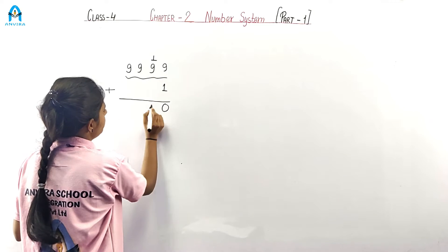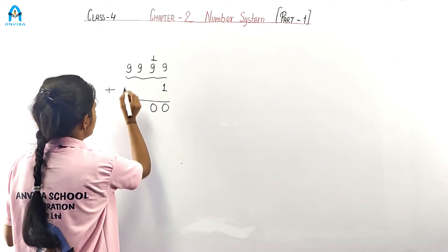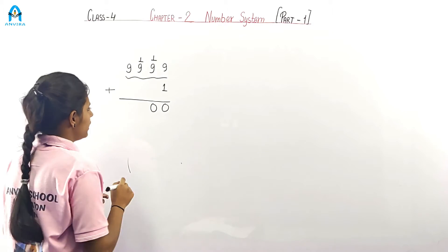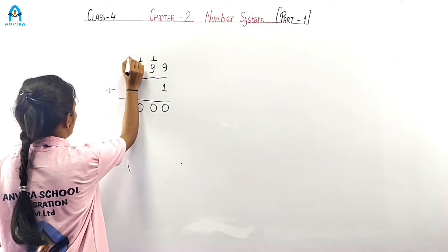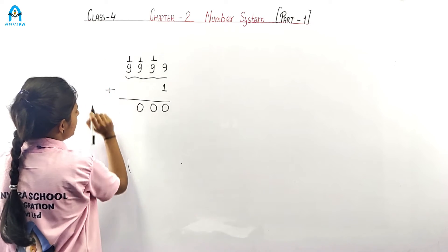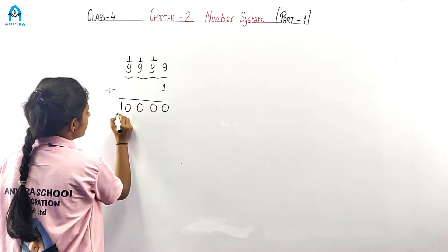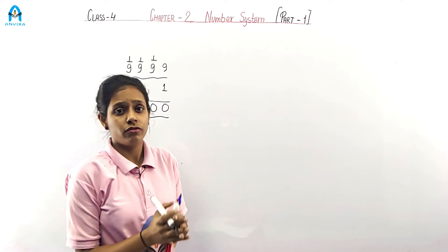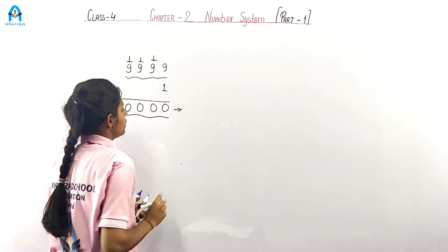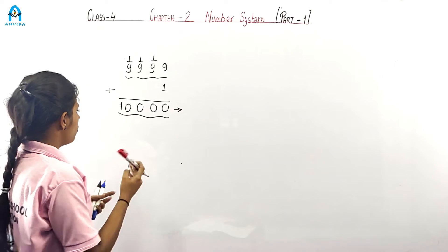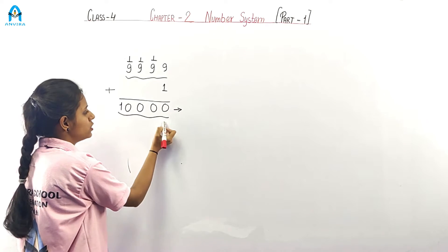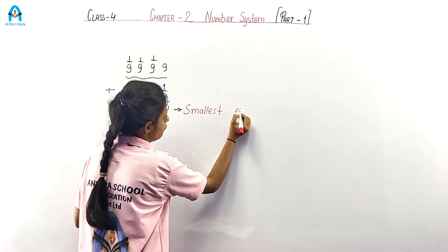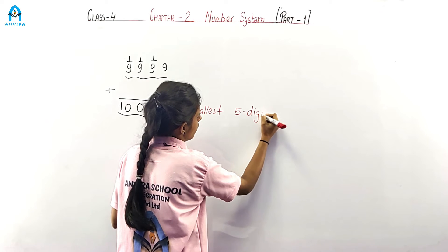Then 9 plus 1 is 10 — write 0 here and carry 1. Again 9 plus 1 is 10, carry over. So we get a 5-digit number which is 10,000. This is the smallest 5-digit number.